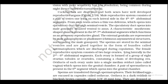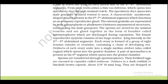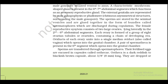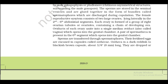The male reproductive system consists of a pair of testes, one on each lateral side in the fourth to fifth abdominal segments (figure 7.18). From each testis arises a thin vas deferens, which opens into the ejaculatory duct through seminal vesicles. The ejaculatory duct opens into the male gonopore situated ventral to the anus. A characteristic mushroom-shaped gland is present in the sixth to seventh abdominal segments, which functions as an accessory reproductive gland. The external genitalia are represented by male gonapophyses — a chitinous asymmetrical structure surrounding the male gonopore. The sperms are stored in seminal vesicles and are glued together in the form of bundles called spermatophores, which are discharged during copulation.